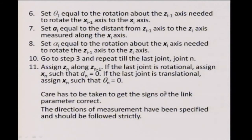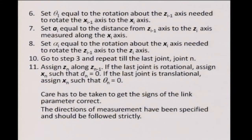It is important to remember the sign convention — if you are working with a real robot and you get it wrong, the robot will do crazy things. Similarly, set a_i equal to the distance from the z_{i-1} axis to the z_i axis measured along the x_i axis. Similarly, alpha_i is the rotation about the x_i axis needed to rotate z_{i-1} to z_i.